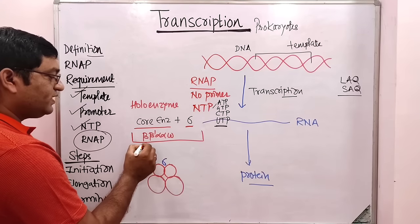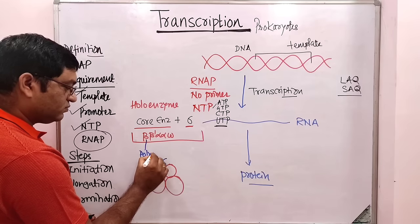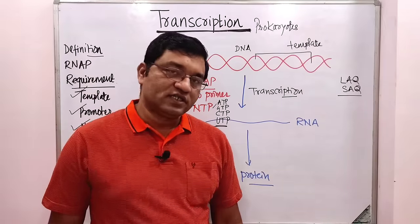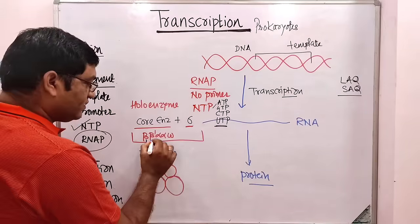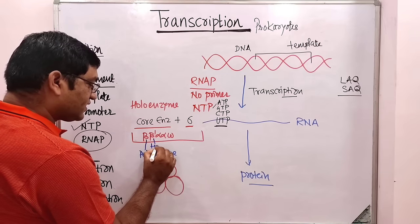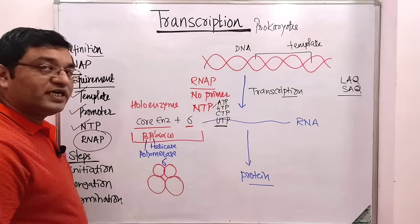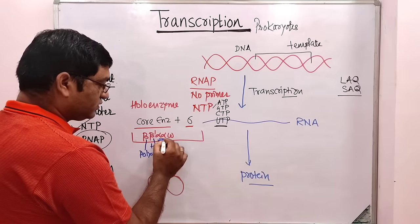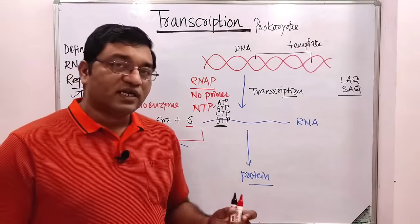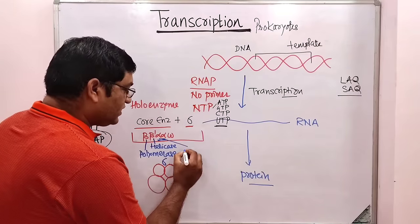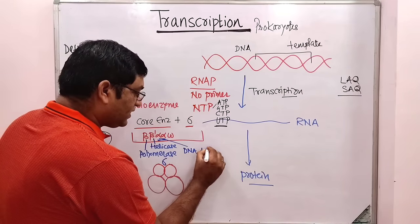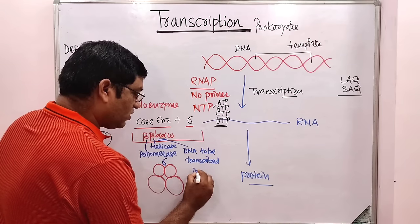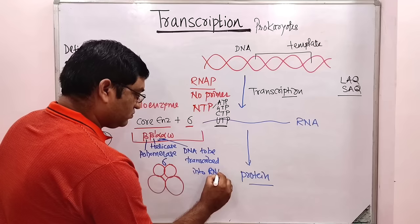What is the role of the beta unit? It is for polymerization — it has polymerase activity and causes 3 prime to 5 prime phosphodiester linkage formation and polymerization. Beta prime has helicase activity, which is required for the unwinding of the DNA molecule. Alpha recognizes the region of DNA to be transcribed into RNA.